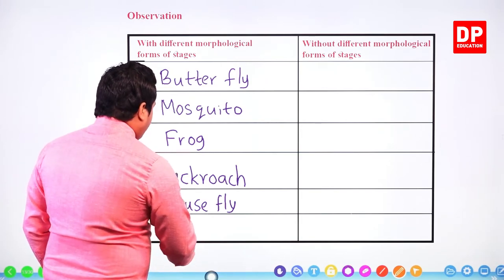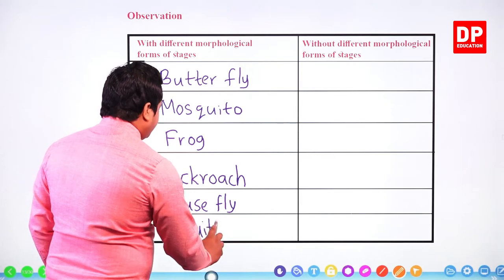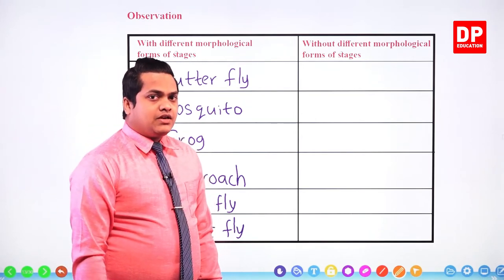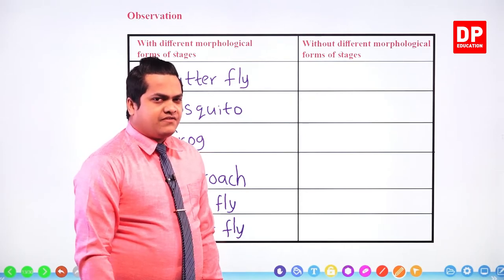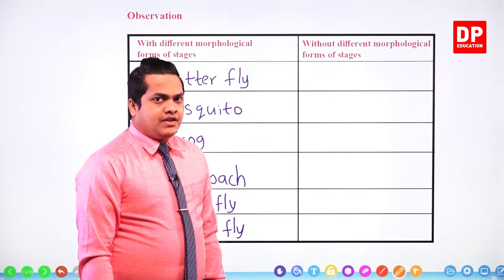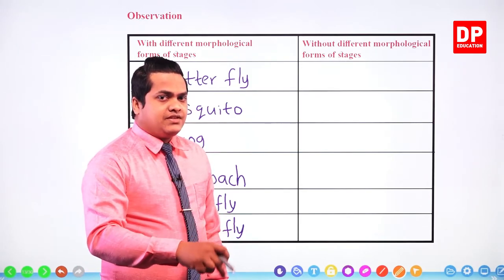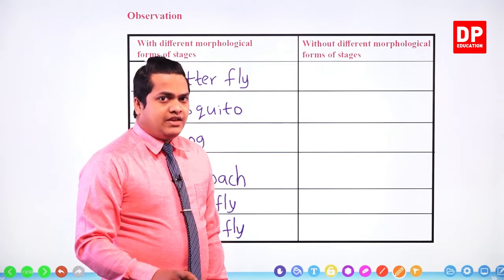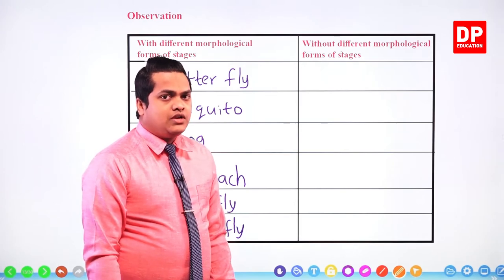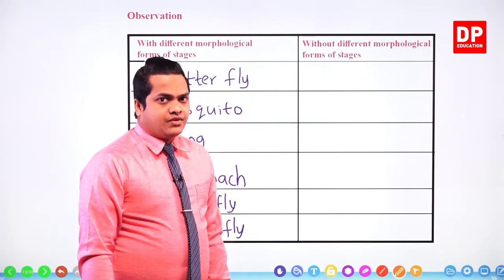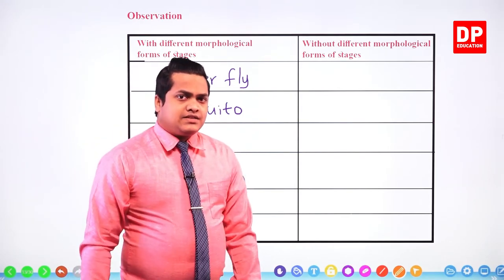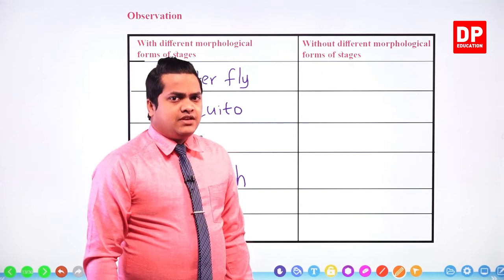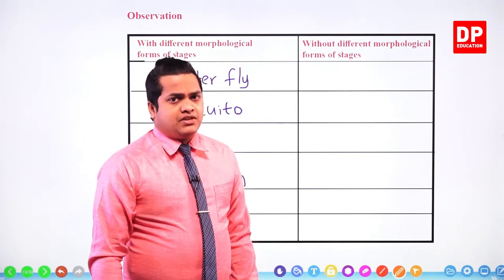There is another fly called the fruit fly. They lay eggs on fruits by piercing the fruit. In the same way, maggots are produced within the fruit — eating the fruit and developing gradually — then finally converting into a fruit fly and coming out from the fruit. There are also some types of ants that go through different stages in their life cycle. There are many different examples — within your home you can find other examples.